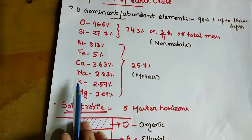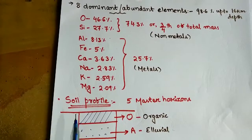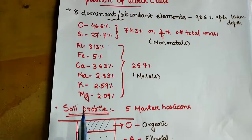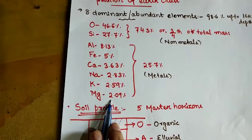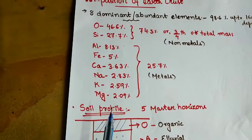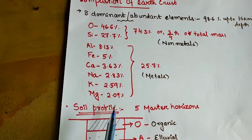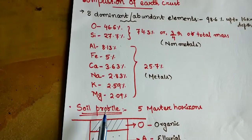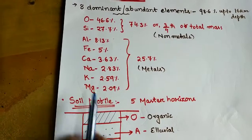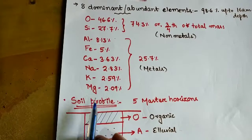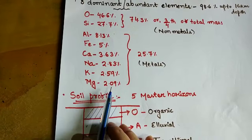The eight dominant elements are: oxygen, silicon, aluminum, iron, calcium, sodium, potassium, and magnesium. The earth crust's 98.6% mass is made up of these eight elements. Oxygen contributes 46.6% (the highest), silicon 27.7%, aluminum 8.13%, iron 5%, calcium 3.63%, sodium 2.83%, potassium 2.59%, and magnesium 2.09% (the lowest).